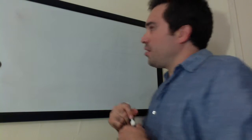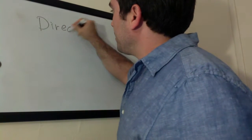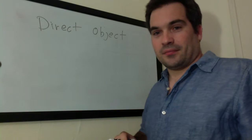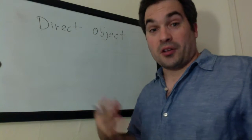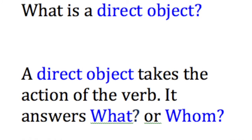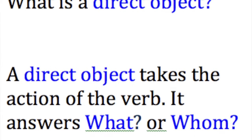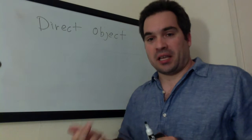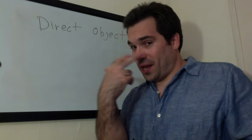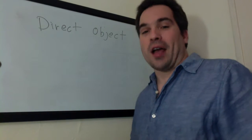Buongiorno. In this video I'm going to talk about direct objects. A direct object answers the question, what? So for example, I see a squirrel. What am I seeing? A squirrel. Squirrel is the direct object.